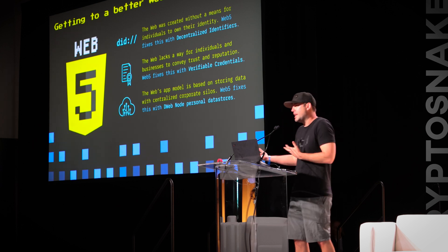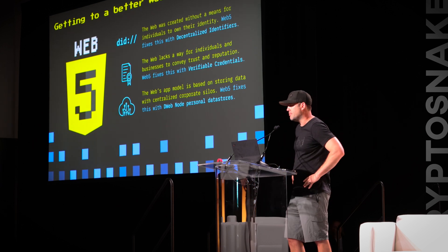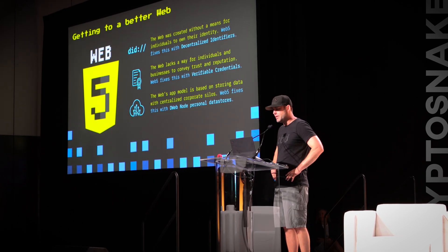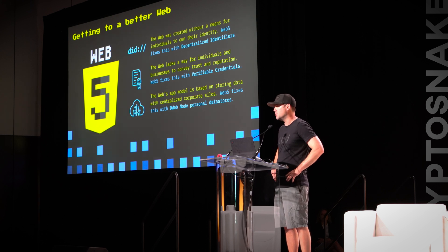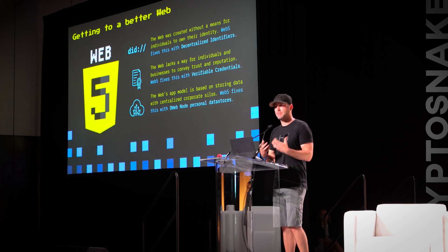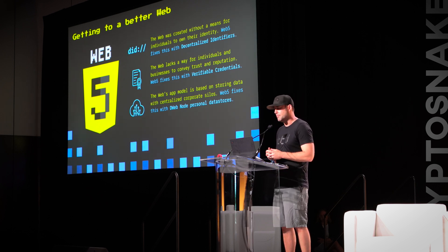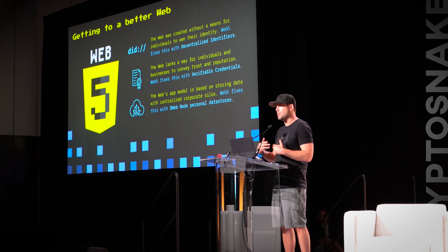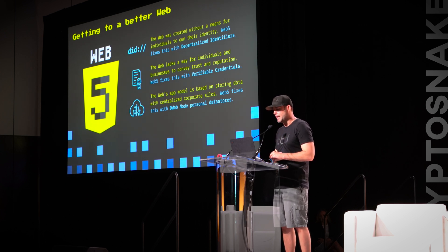That's kind of why we named it Web5. People ask questions — maybe it was a little separation distance from Web3, just skip the number. Really, it was patterned after coming up with an initiative where we could rally around a set of features that enhance the qualities of the Web. Those three features are: DIDs, that allow you to have identifiers that you own and control, backed by strong cryptography and keys you own; verifiable credentials, a way for people to exchange trust; and a web app model based on storing data with you.